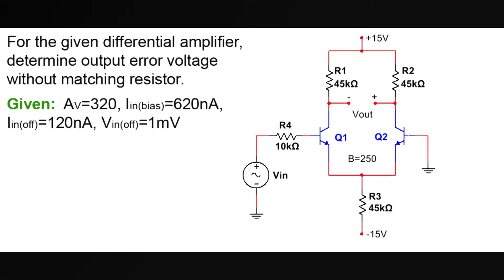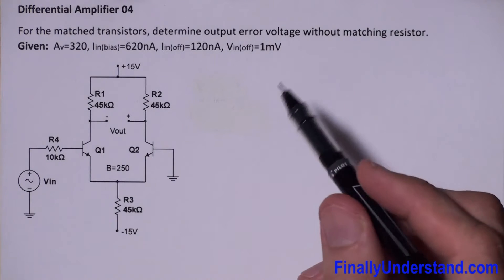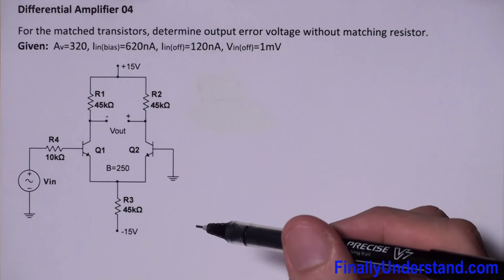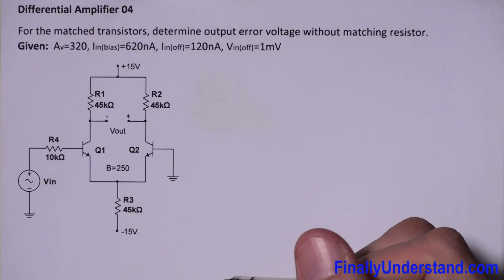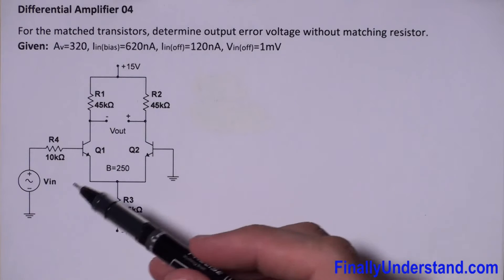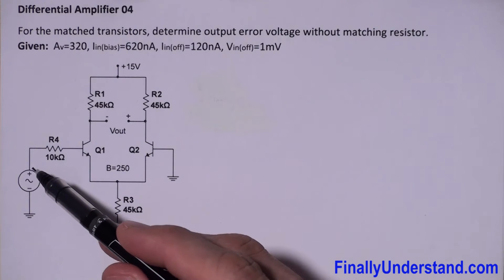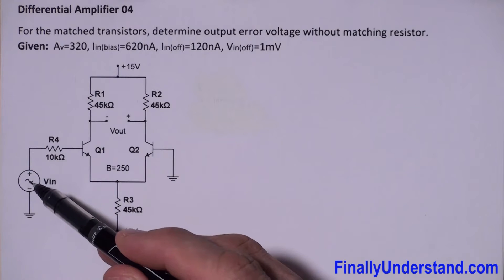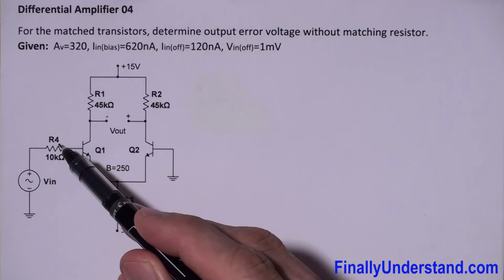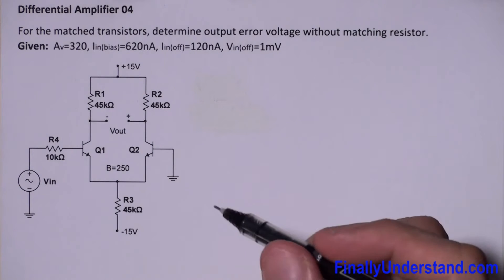Let's take a look at this example. This time we're supposed to determine the output error voltage. In order to do so, we have to perform the DC analysis. To do the DC analysis, we're supposed to assume that the signal source is shorted — in other words, R4 is connected directly to ground.